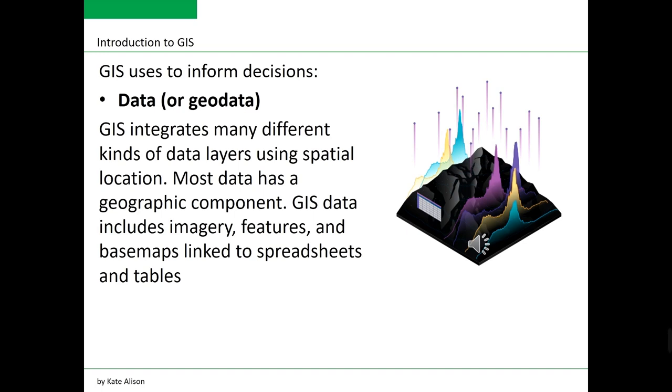The second component is data or geodata. GIS integrates many different kinds of data layers using spatial location. Most data has a geographic component. GIS data includes imagery, features and basemaps, links to spreadsheets and tables.